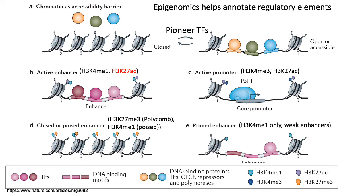Across the genome, there are different classes of enhancers. Enhancers marked by K27 acetylation are generally some of the strongest enhancers. Enhancers marked with just K4 monomethylation are considered weak enhancers, associated with lower levels of activation. These are also called primed enhancers — it's easier to quickly activate them because all you need to do to turn a primed enhancer into an active enhancer is add K27 acetylation.